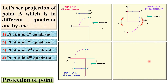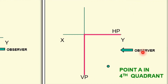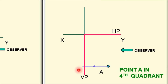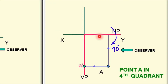Next, point A is in the fourth quadrant. If point A is in the fourth quadrant then it will be over here. Once again the observer is looking in this direction, the projection is on the VP and is denoted by a-dash, and the top view is on the HP and is denoted by 'a'. But once again you have to rotate the HP in the clockwise direction so the 'a' point will move to its new position.